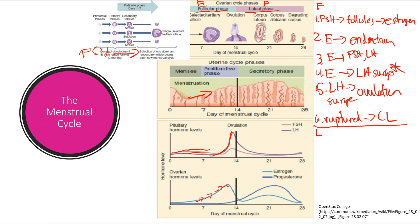Now we're going to talk about the luteal phase. Our corpus luteum is going to secrete progesterone — remember, this is the star of the show now. So progesterone is going to go up because we're in the luteal phase. What it's going to do is act on the endometrium and cause it to mature — you're going to get more blood vessels and other stuff, causing endometrial maturation. It's going to make the endometrium a really nice place for your blastocyst to implant and to grow.